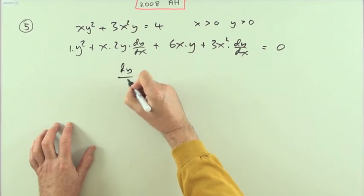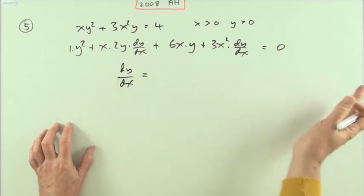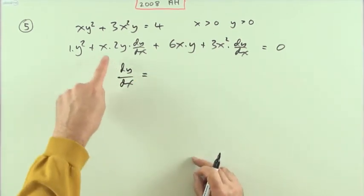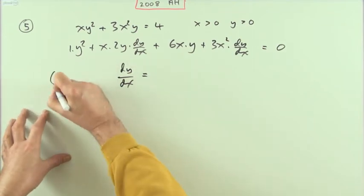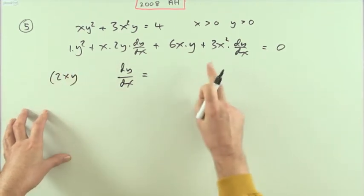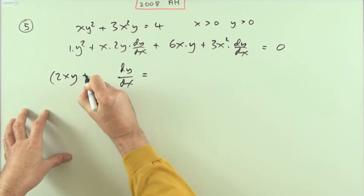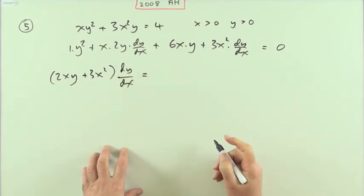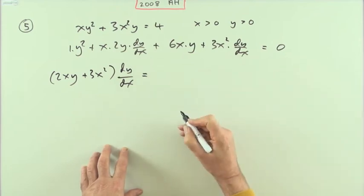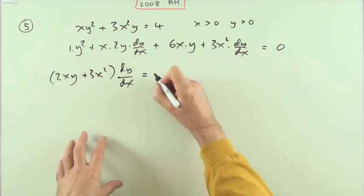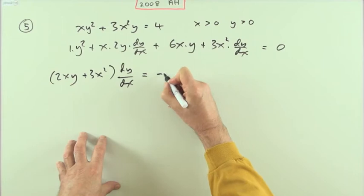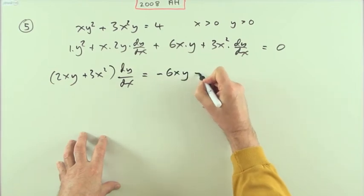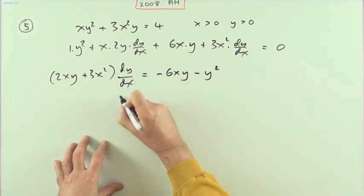Plus leave that first part alone, 3x squared times, and the derivative of y with respect to x is just dy by dx, and that equals zero. Now gather that lot up to get dy by dx. So I want dy by dx on this side and the rest on that side. What have I got for dy by dx? I've got a 2xy and I've got a 3x squared.